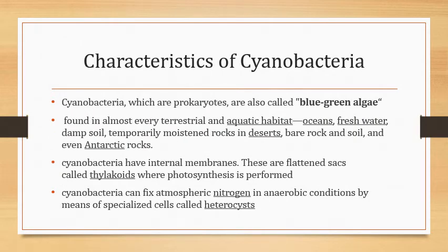Some more characteristics of cyanobacteria: they are prokaryotes also known as blue-green algae and are found almost everywhere. They are aquatic inhabitants present in ocean, fresh water, damp soils, moistened rocks, deserts, bare rocks and soils, and even on Antarctic rocks. Cyanobacteria have internal membranes called thylakoids that are responsible for photosynthesis. They fix atmospheric nitrogen under anaerobic conditions with the help of specialized cells known as heterocysts.